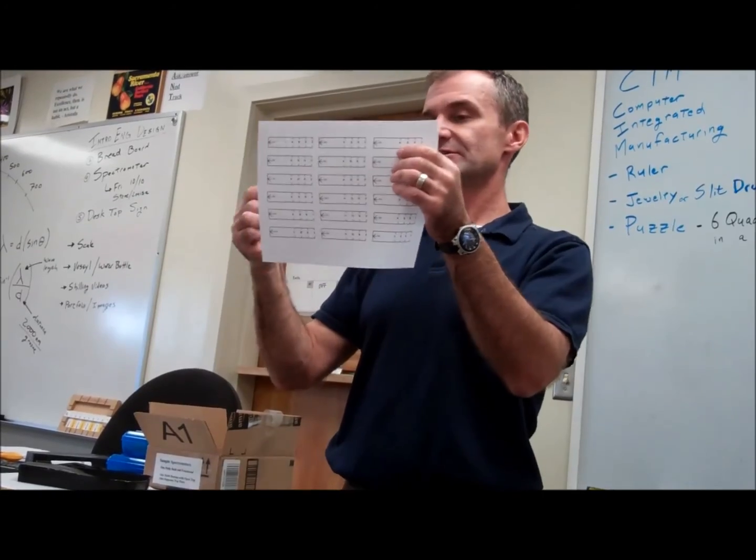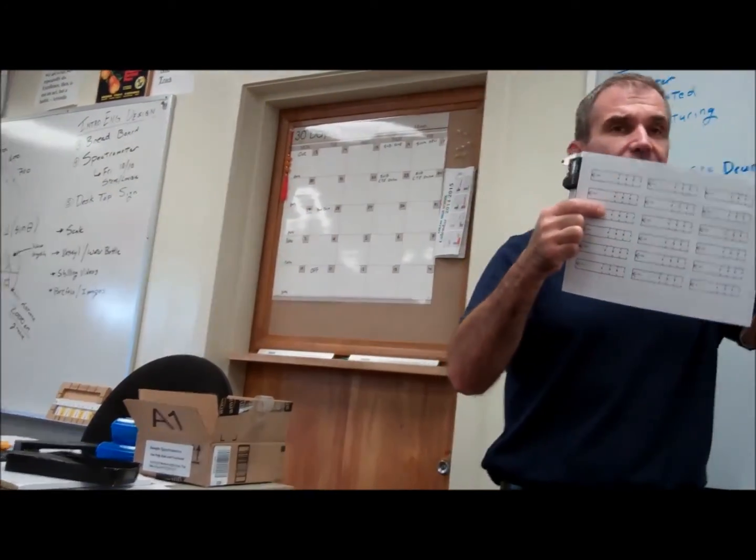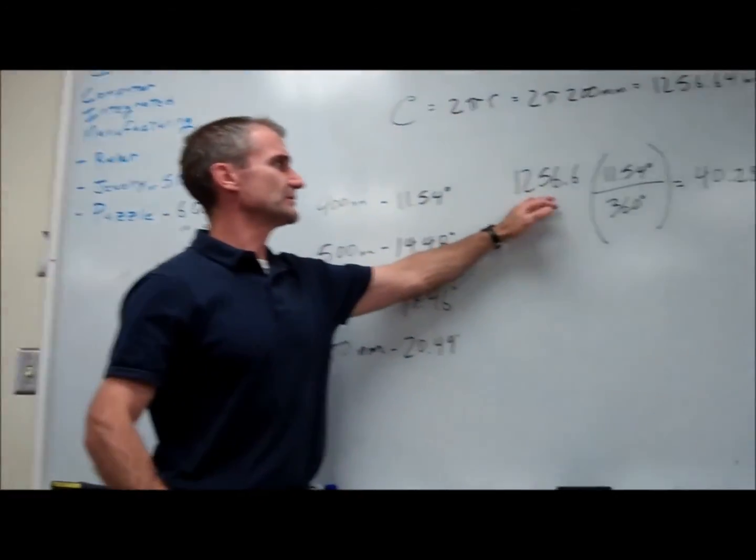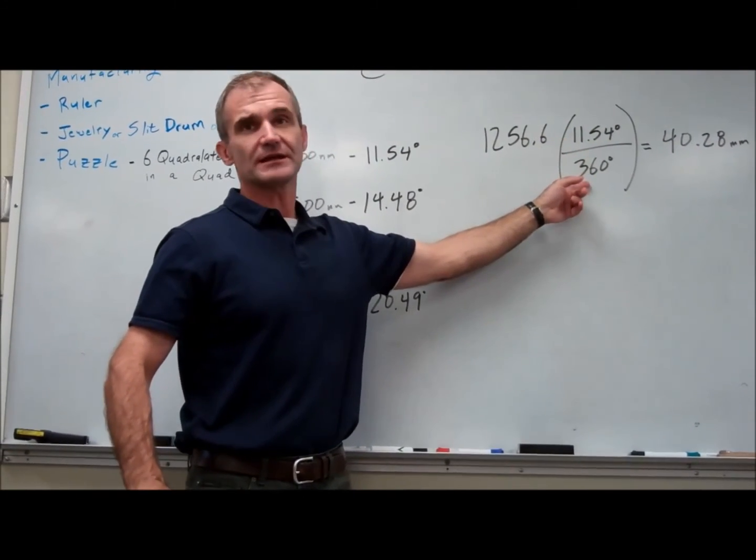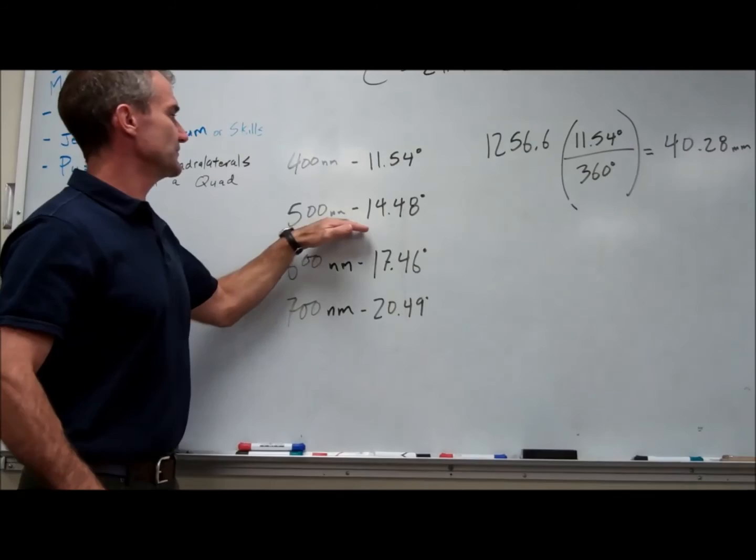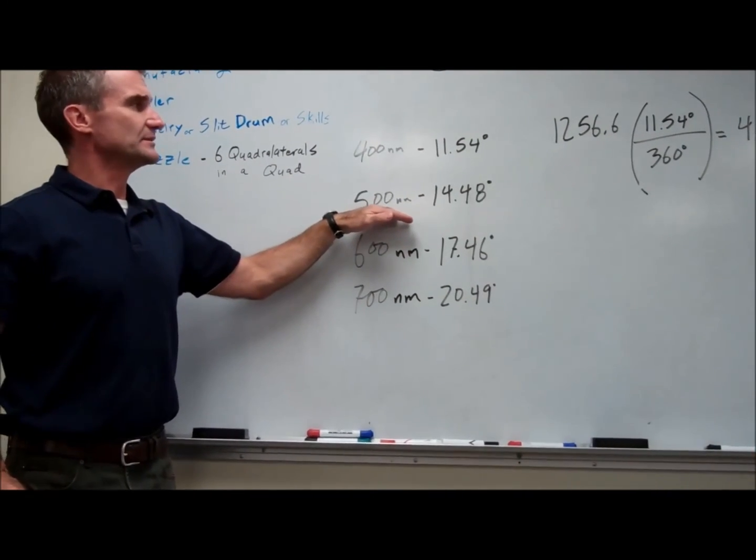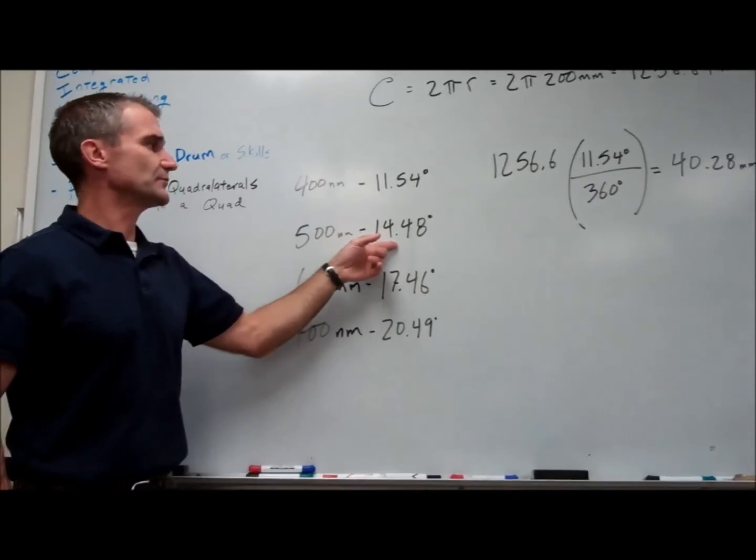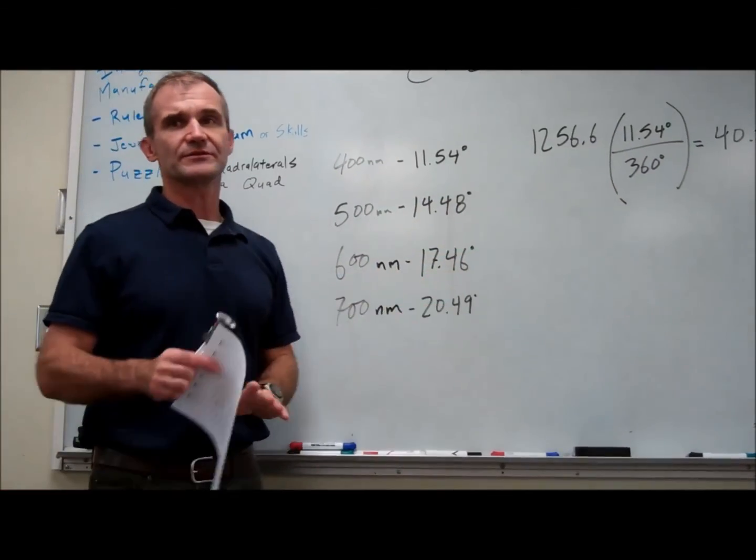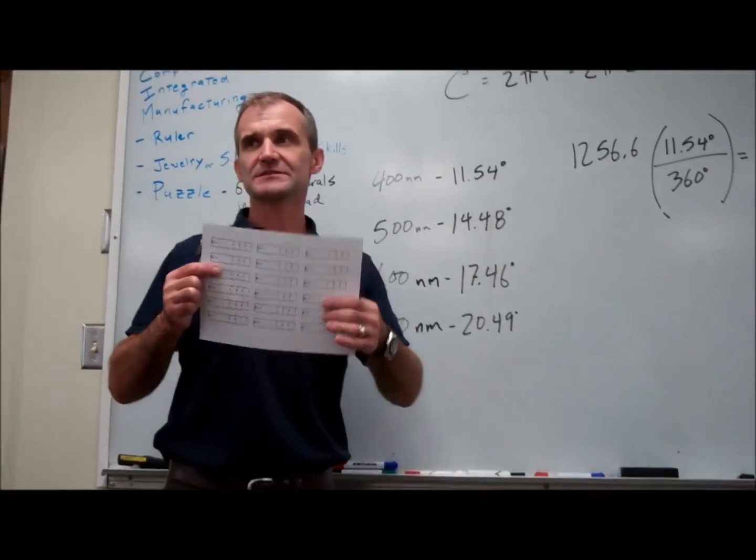So you're actually just finding the length of an arc by taking the overall circumference, multiplying by the angle you want over the total angle. So to find the 500 nanometer distance, you would take that same circumference, multiply by the ratio 14.48 over 360. Any questions on any of the math?